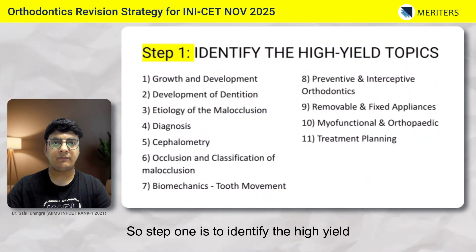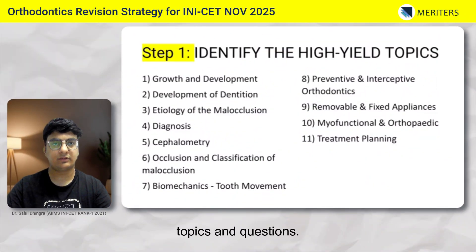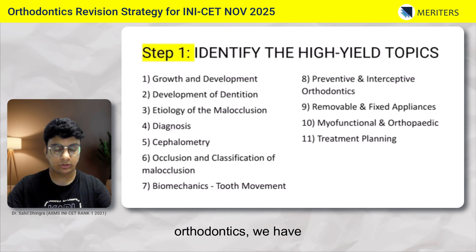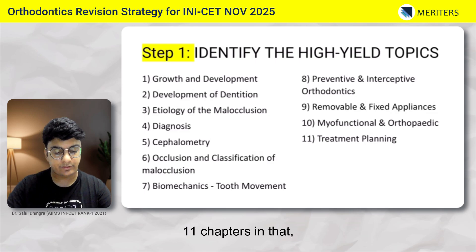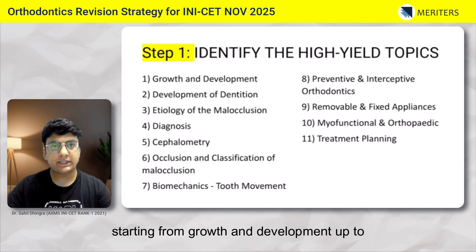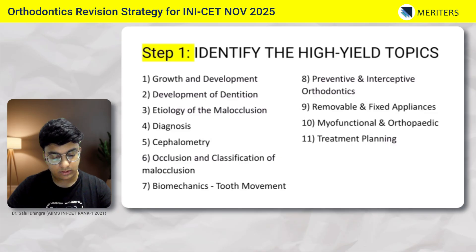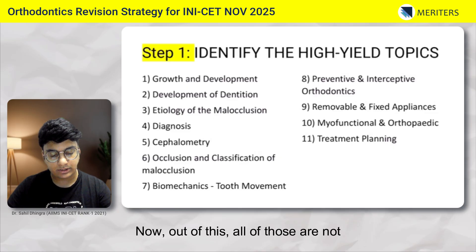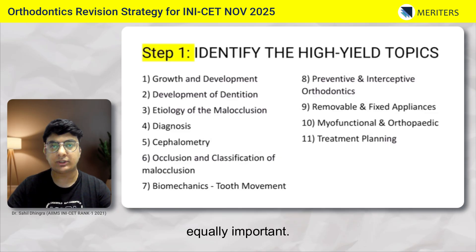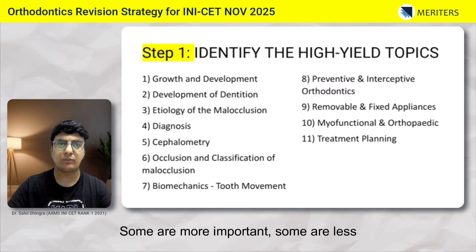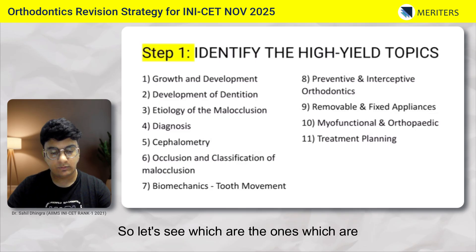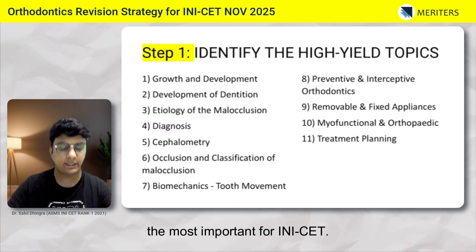Step 1 is to identify the high yield topics and questions. If we see the syllabus of orthodontics, we have 11 chapters starting from growth and development up to treatment planning. Not all of those are equally important — some are more important, some are less important. So let's see which are the most important ones for INICET.